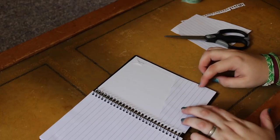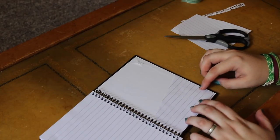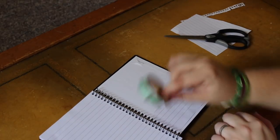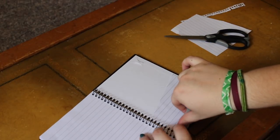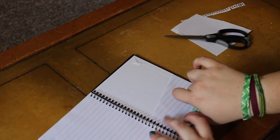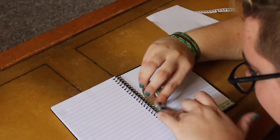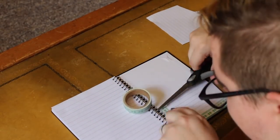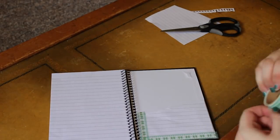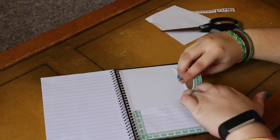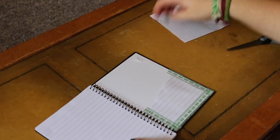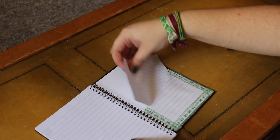Now once you have that pocket there, you are going to want to take the tape that we had earlier and just tape over it so it stays in the notebook. And now you have a little pocket here that you can put things in.